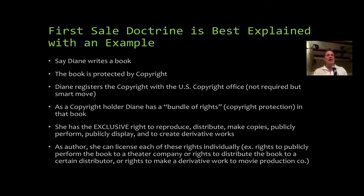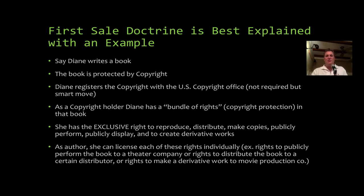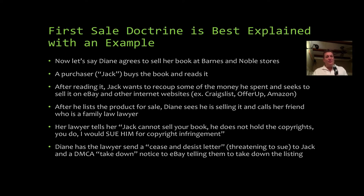Each of those rights can be individually licensed. For example, the right to publicly perform the book can be granted to a theater company, the right to distribute can be granted to a certain distributor, and the right to make a derivative work could be granted in a written contract to a movie production company. So you have this bundle of rights and they can all be licensed.